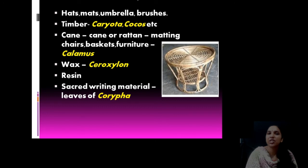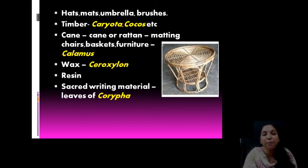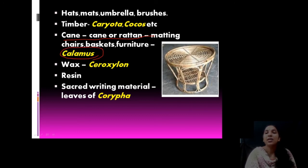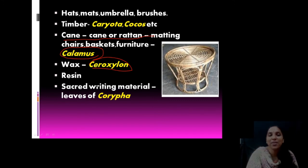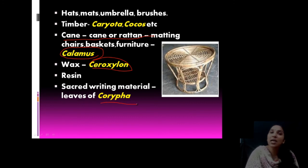Hats, mats, umbrellas, and brushes are all prepared from palms. Timber of Caryota and Cocos — that is coconut — is useful for making furniture. Cane or rattan is another very important product, produced from Calamus rotan. Chairs, tables, and swings are prepared from rattan or cane. Wax is prepared from Ceroxylon. Resins are available. Palm leaves are used as sacred writing material in traditions — one example is Livistona.